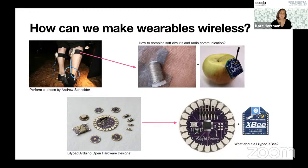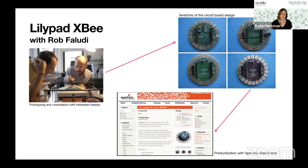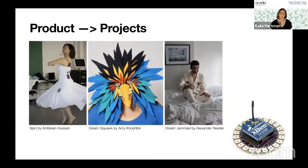Because it was open source, and because of the sharing of others, we were able to benefit and design something new — prototyping and consulting with interested makers, working through iterations of the circuit board design, and ultimately partnering with SparkFun Electronics on the productization, including our design in the larger Lilypad series. One thing new to me in this process of taking something from what we made for ourselves to something shared as a product people could buy is that it goes from products to projects made by people you know or people all over the world.